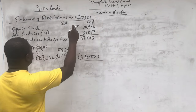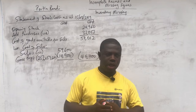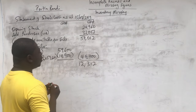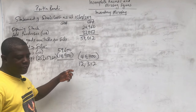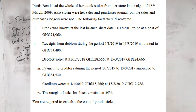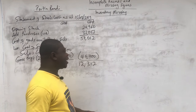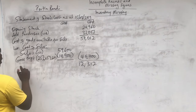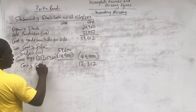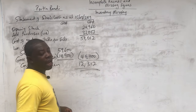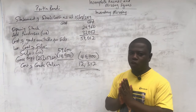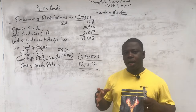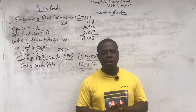We are told Poshia Bwedi had the whole of her stock stolen on the night of 15th March. The whole stock was stolen - there were no goods salvaged or stock retrieved - and therefore this final figure of 12,312 will be called cost of goods stolen. That is how to calculate the cost of goods stolen.